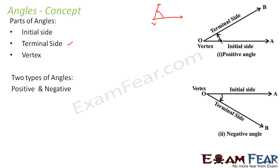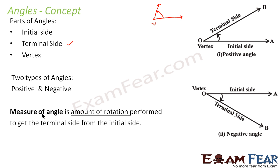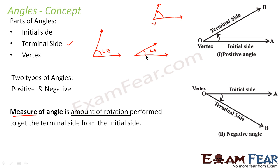If you are rotating in the anti-clockwise direction, you get positive angles; in the clockwise direction, you get negative angles. The measure of an angle is the amount of rotation performed. For example, in angle A the amount of rotation is less, and in angle B the amount of rotation is more — so angle B is bigger than angle A.